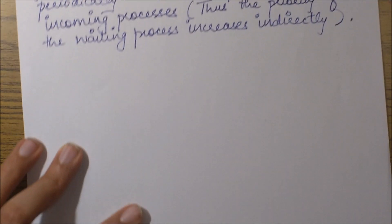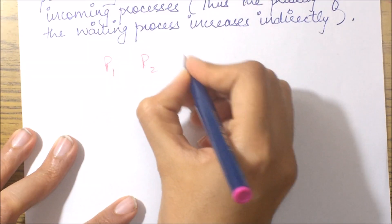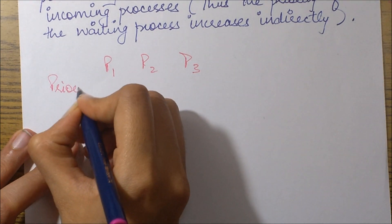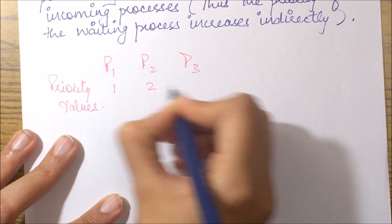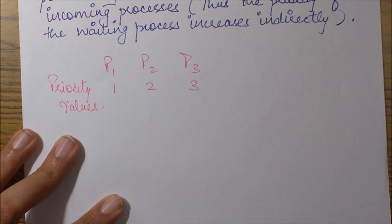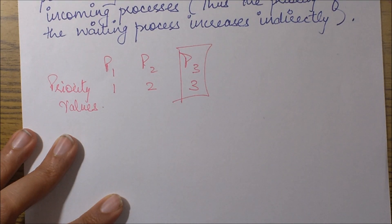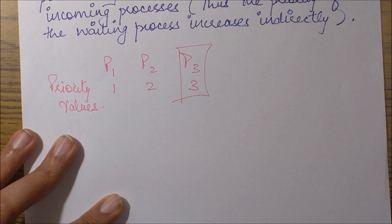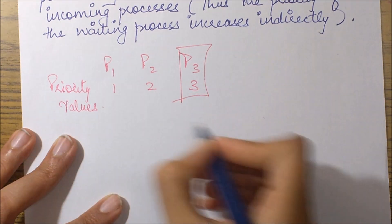Let's suppose we have three processes P1, P2, and P3, and their priority values are 1, 2, and 3 respectively. That means P3 is the least priority process and will be waiting until P1 and P2 complete. Now after some time, what will the OS do? It will be increasing the priority of the executing processes.